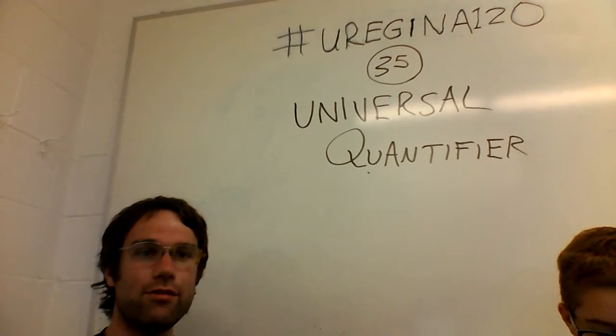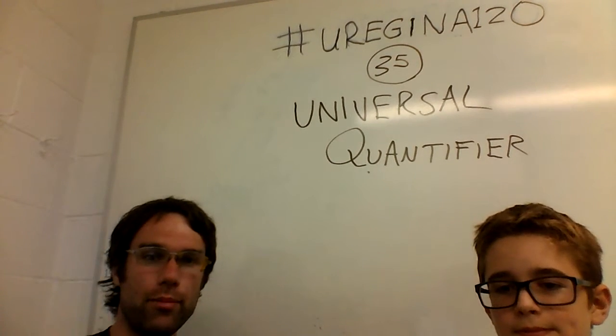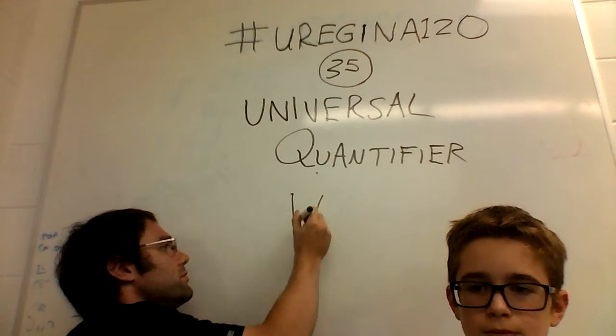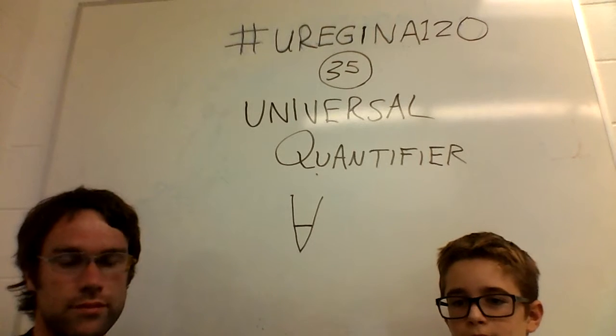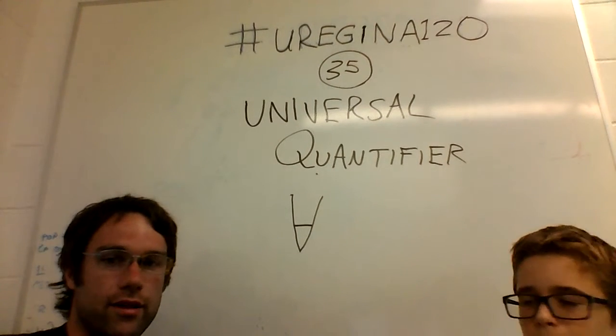So what is the universal quantifier? Well, on paper, or in symbol form, it's going to look something like this. That is indeed an upside-down capital A. That's exactly what it's looking like.